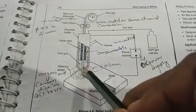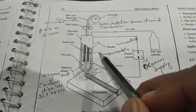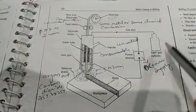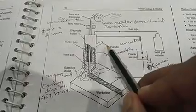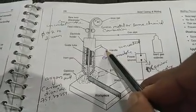Then these are the inert gases. In this hollow tube, the gas is released by this inert gas cylinder.